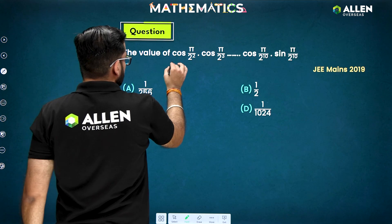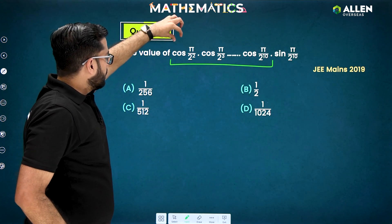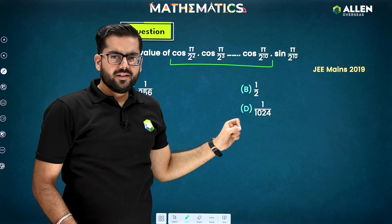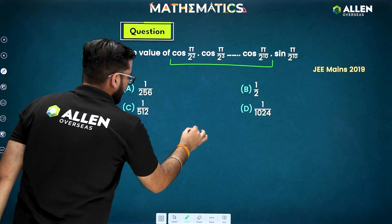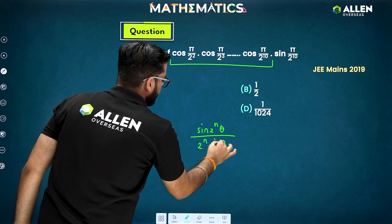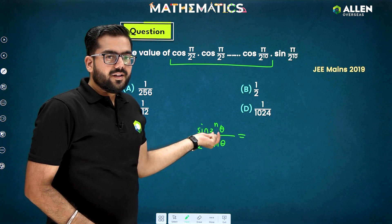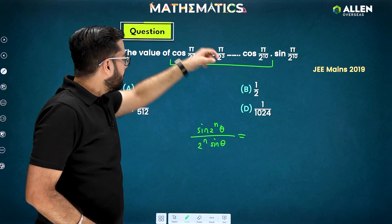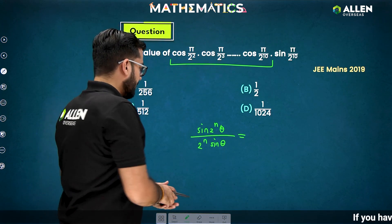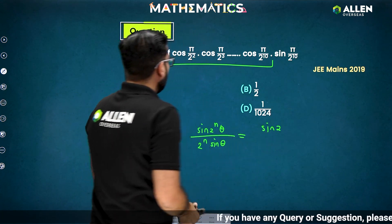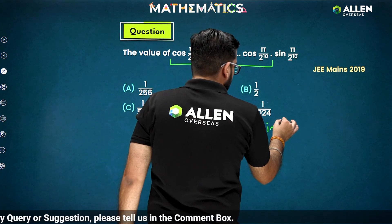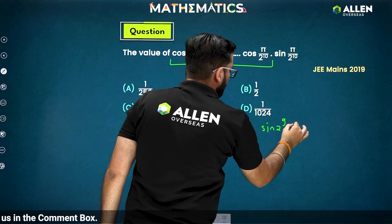Here we have cos(π/2²) · cos(π/2³) — it is better to apply the formula directly. The formula is sin(2^n · θ) / (2^n · sin θ). The number of terms: we start from 2 and go till 10, so the number of terms is 9. Therefore we have sin(2⁹ · θ) where θ = π/2^10, giving sin(2⁹ · π/2^10) in the numerator.